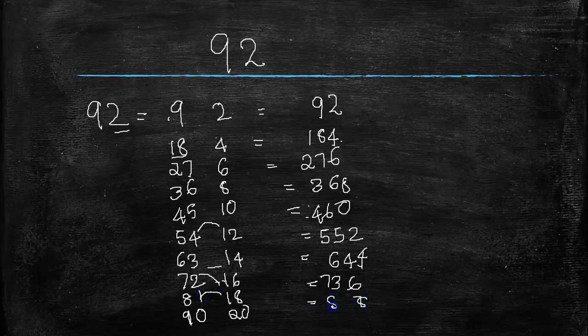Here units place is 0, then this 2 is added to this 90, that is 92. Very simple, right?